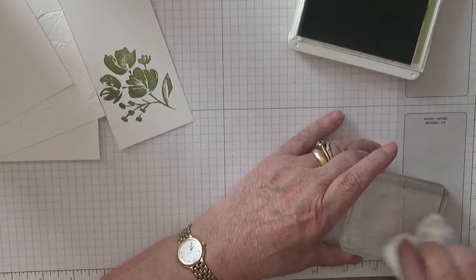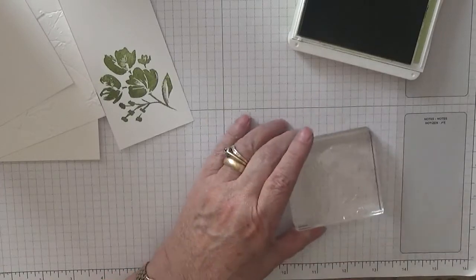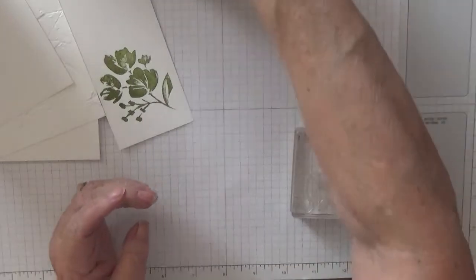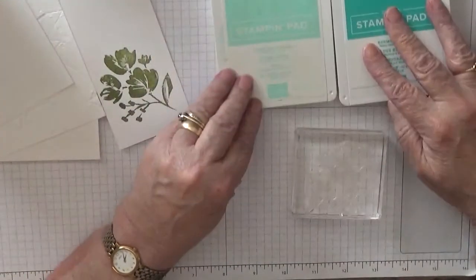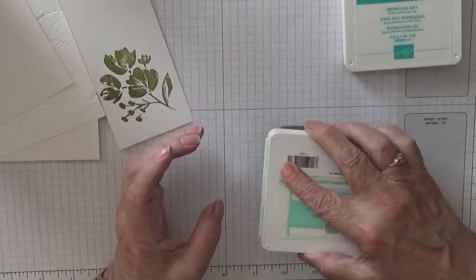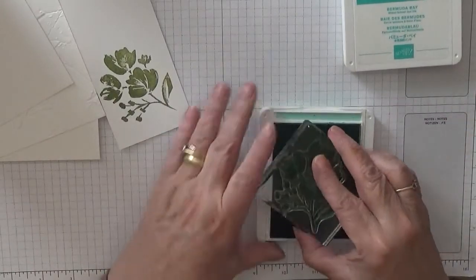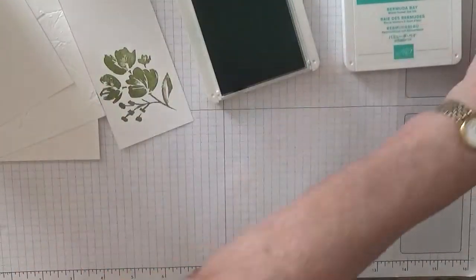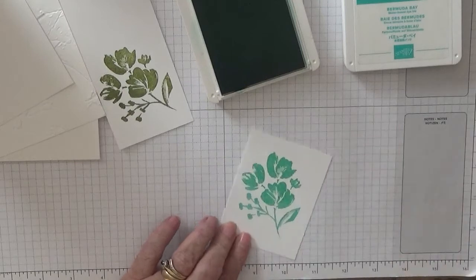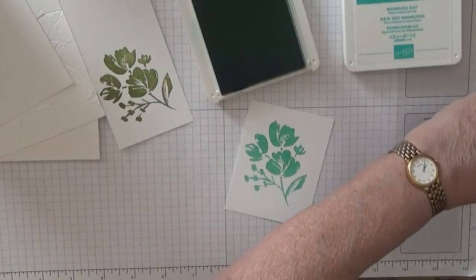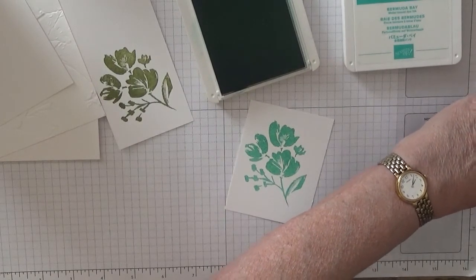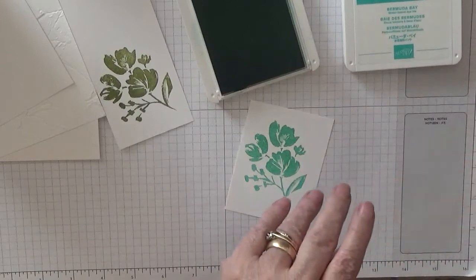And clean it up because we're going to stamp it now in, I've got Bermuda bay and coastal cabana. So we're going to stamp it in coastal cabana.